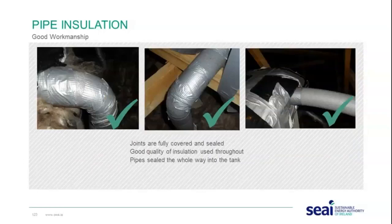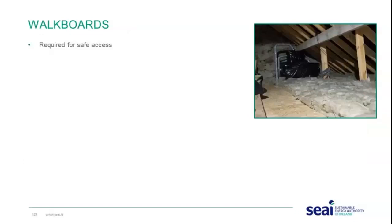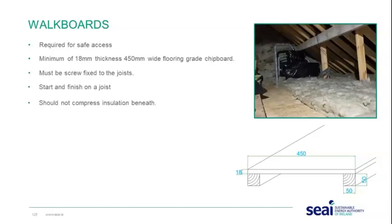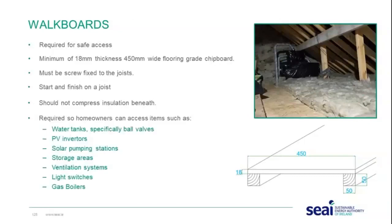Walk boards are required for safe access in a roof space. The minimum thickness is 18 millimetres and the width is 450 millimetres of flooring grade chipboard. These must be screwed and fixed to the joist, start and finish on a joist, and should not compress the insulation beneath.